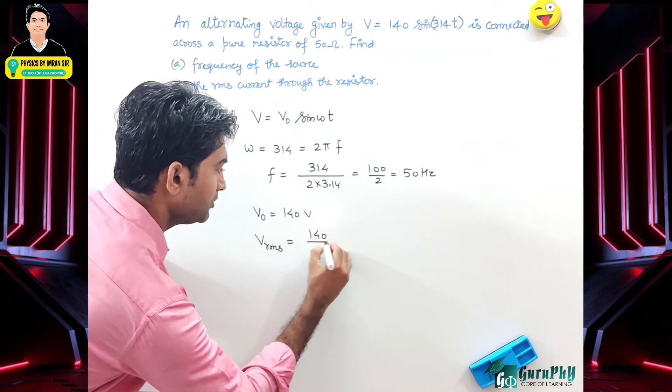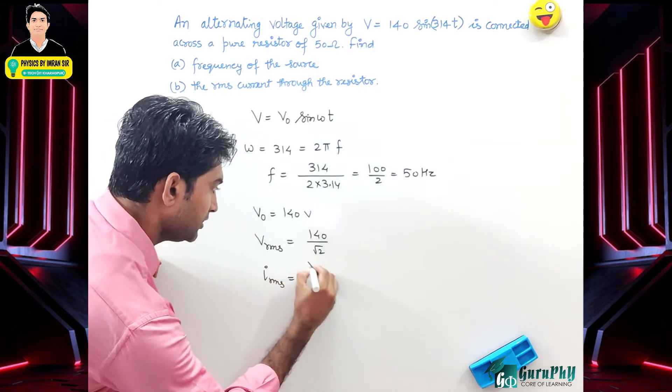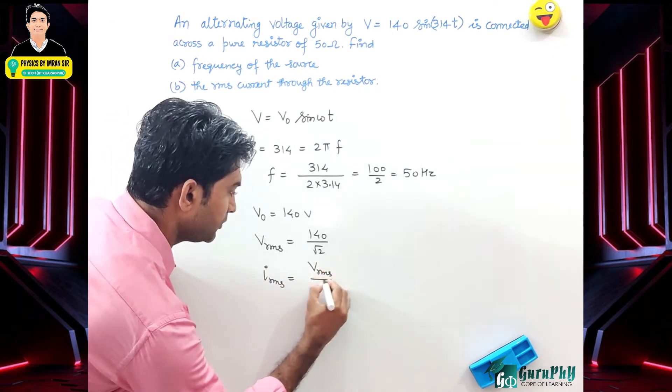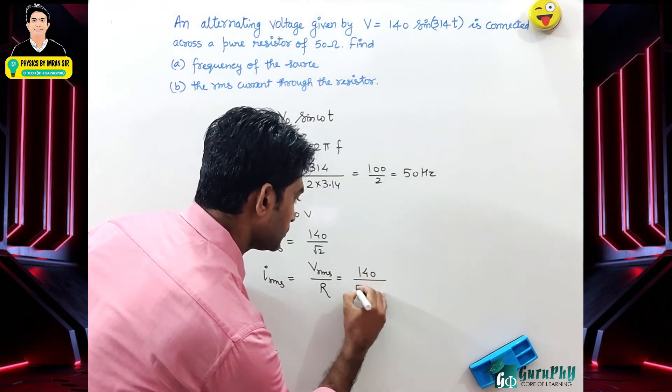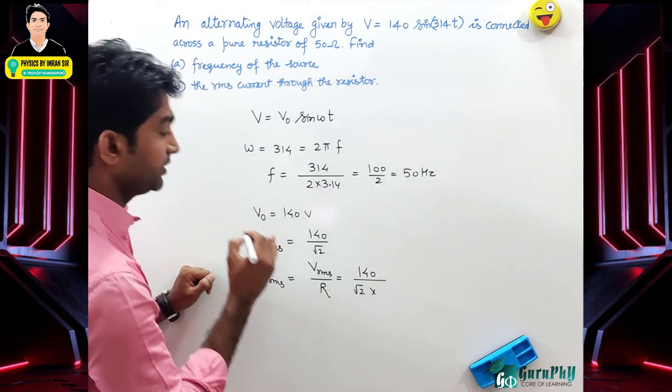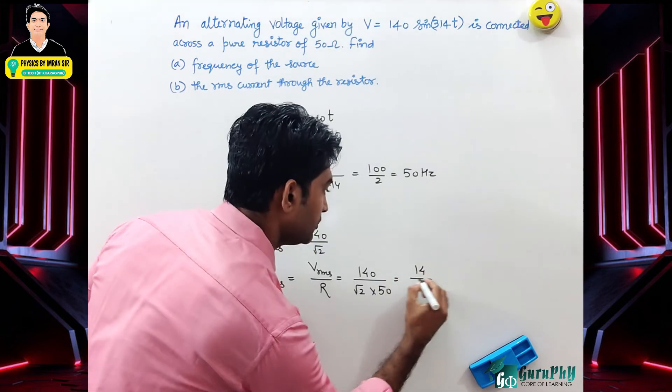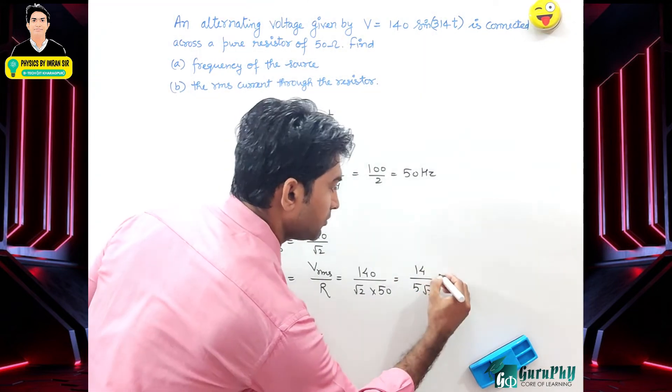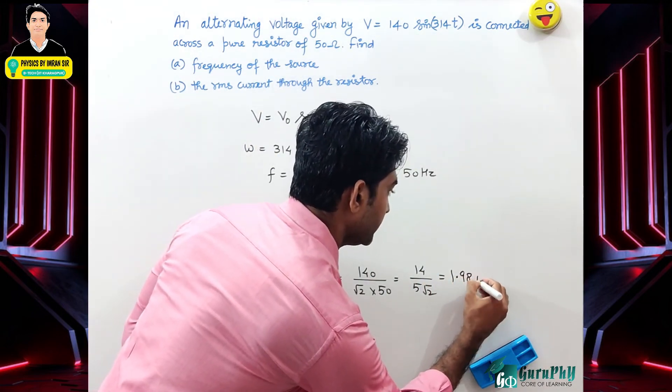Therefore, Iᵣₘₛ = Vᵣₘₛ/R = 140/(√2 × 50) = 14/(5√2) amperes. If you calculate the value, it comes out to 1.98 amperes.